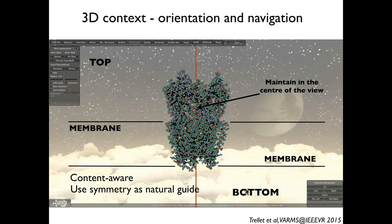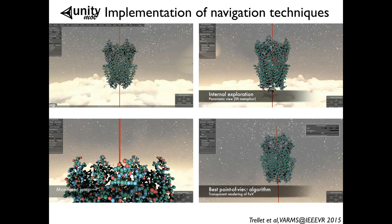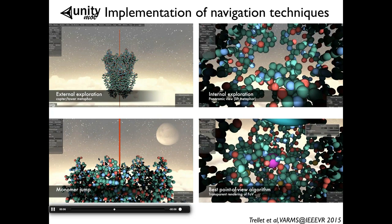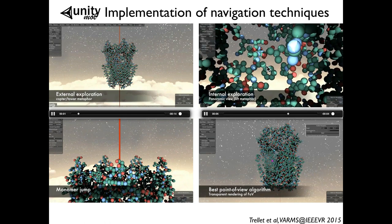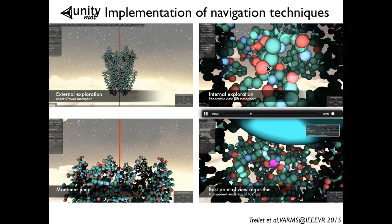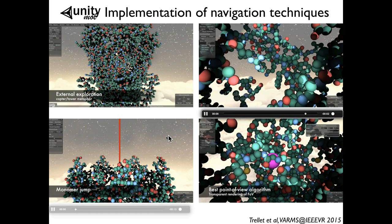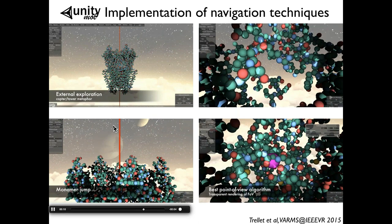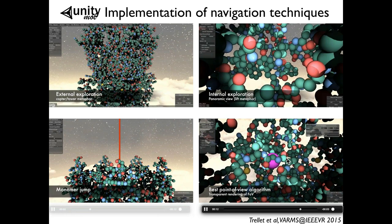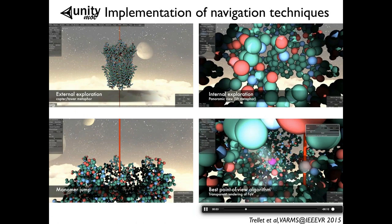You can actually also use this information for the navigation, making the navigation metaphor aware of the context of the protein and using the symmetry as a natural guide. Here are four navigation tools adapted to this protein's context. First, an external exploration where you can spin the protein around its axis and go up and down closer or further apart. Then, for looking at the ion channel inside, we use an analogy with being in a lift that can go up and down along the channel axis. We can also exploit the five-fold symmetry — if you're looking at an interesting site, you could easily jump to any of the four equivalent sites linked by symmetry. The last example assumes you have selected a given residue of interest, and then the software calculates the camera path to get there.